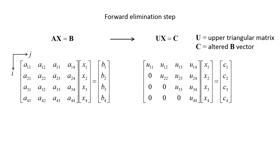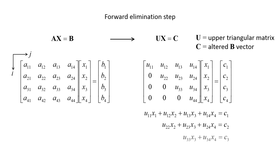Using matrix multiplication, the first equation is u11x1 plus u12x2 plus u13x3 plus u14x4 equals c1. The third equation is u33x3 plus u34x4 equals c3. Recall that the components of the U matrix and b vector are known constants, and we are solving for the unknowns x1, x2, x3, and x4.